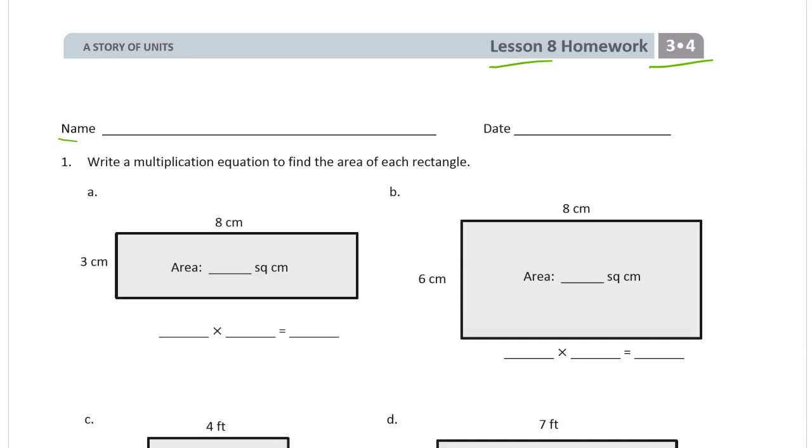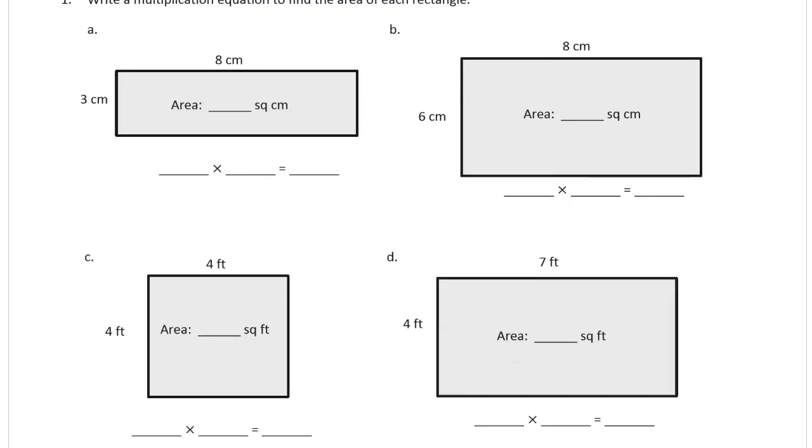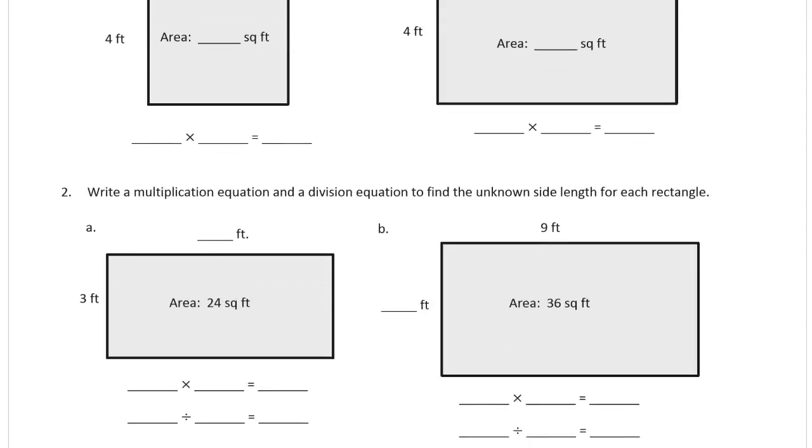We're writing multiplication equations to find the areas of rectangles. All you have to do is find the side lengths. We'll call it length times width is the formula, equals the area. And you'll notice the units. These will change, and the units are kind of set up for us here.